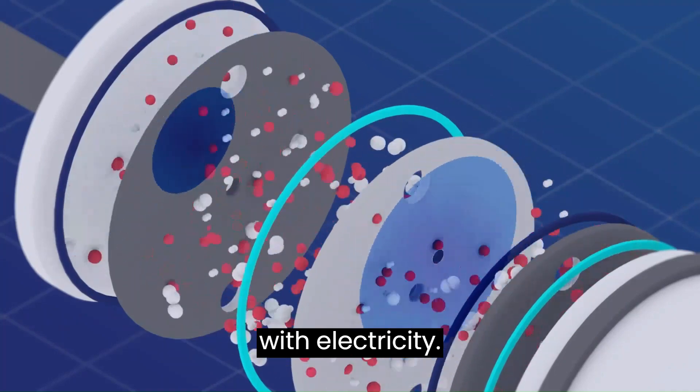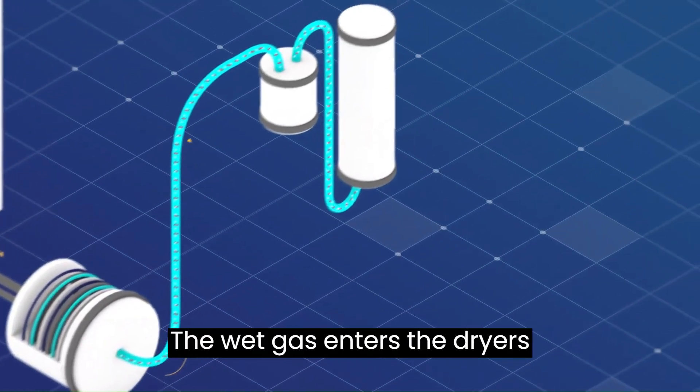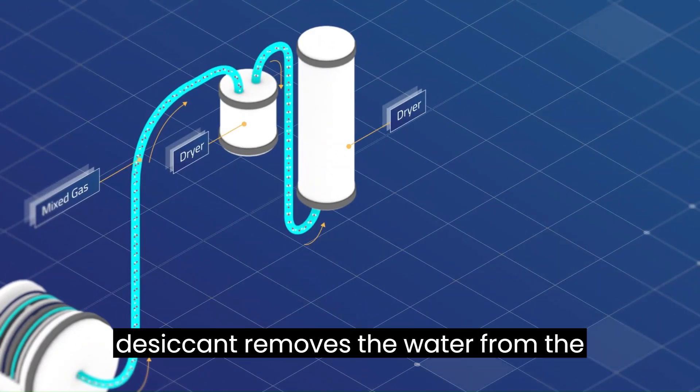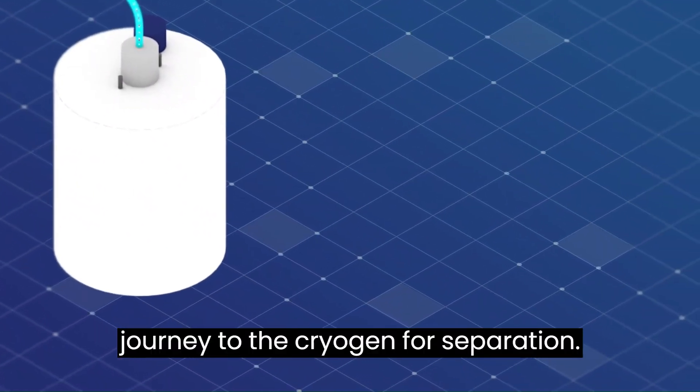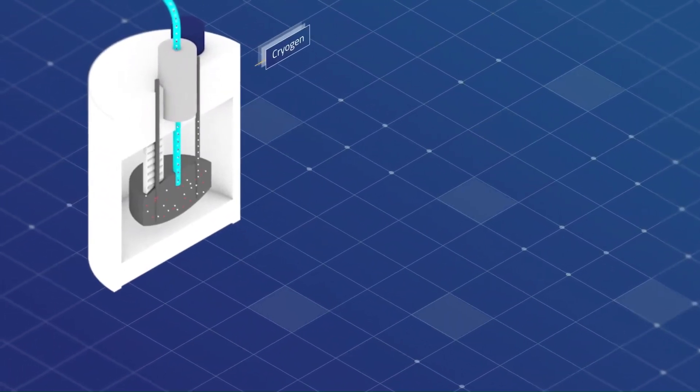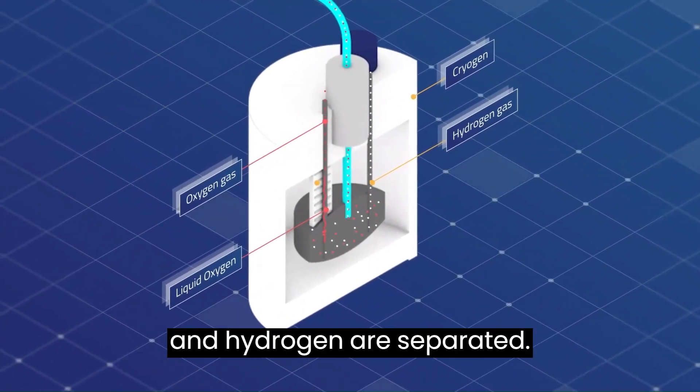The wet gas enters the dryers. Desiccant removes the water from the mixed gas stream, and gas continues its journey to the cryogen for separation. The cryogenic system is where the oxygen and hydrogen are separated.